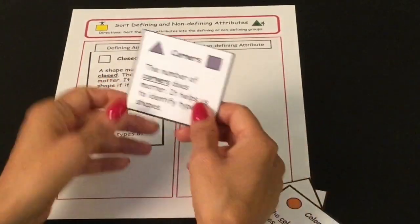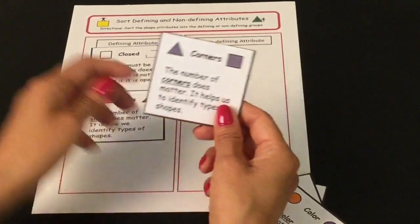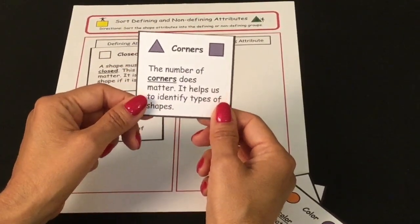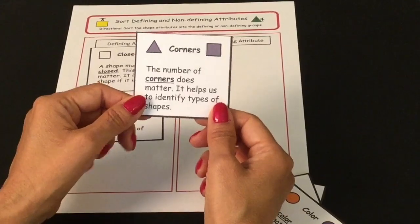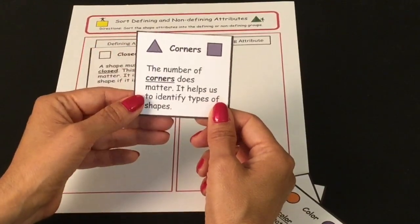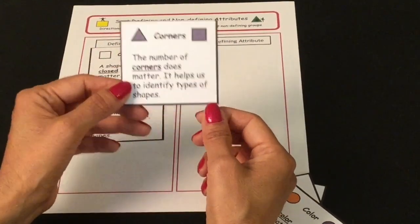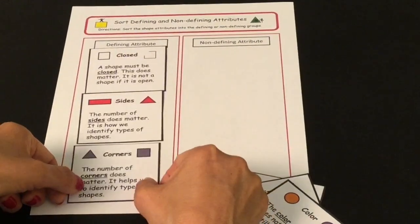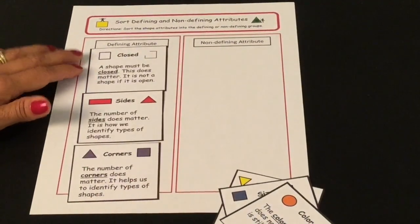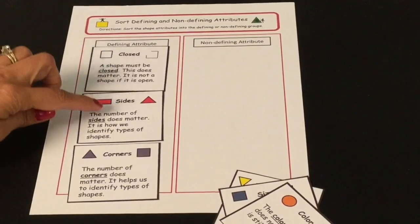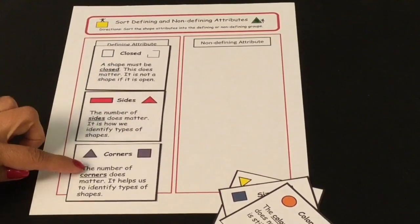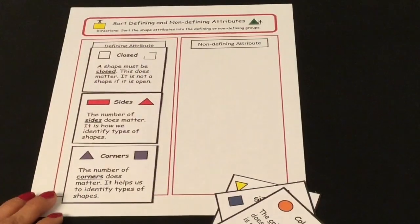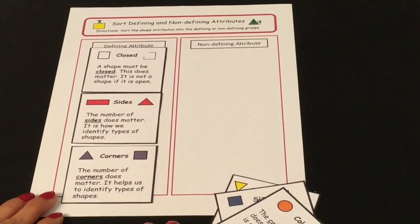The next defining attribute is the number of corners. Like the number of sides, it matters. In order to decide whether or not something is a shape, it depends on the number of corners — it helps us tell whether it's a triangle or a square or a rectangle. So corners is another defining attribute. Those are the three defining attributes: it has to be closed, it needs to have sides, and it needs to have corners. Those are attributes that matter in order for it to be called a shape.